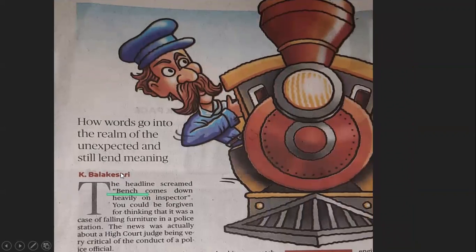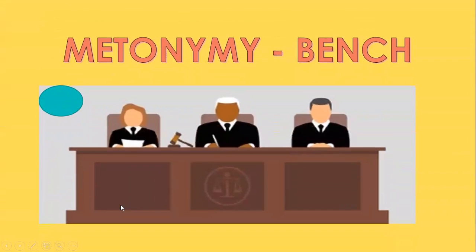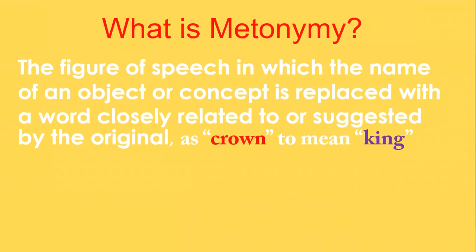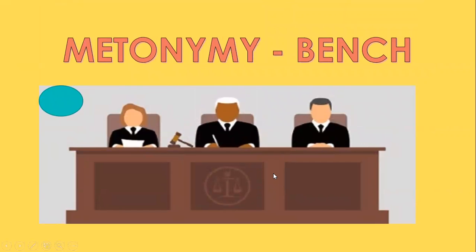Look at the usage of 'bench' here. What do you understand? Bench is a metonymy here — one of the poetic devices you have learned from your poem. Metonymy is the figure of speech in which the name of an object or concept is replaced with a word closely related to or suggested by the original, as 'crown' to mean 'king.' Here, bench is closely related to the judges or magistrates; hence, the usage of bench as metonymy is right.